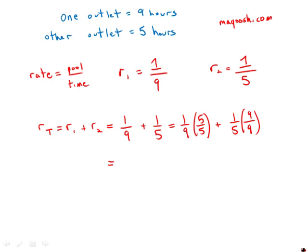We have 5/45 plus 9/45. Adding those together gives us 5 plus 9 over 45, which is 14/45, and this is the new rate.